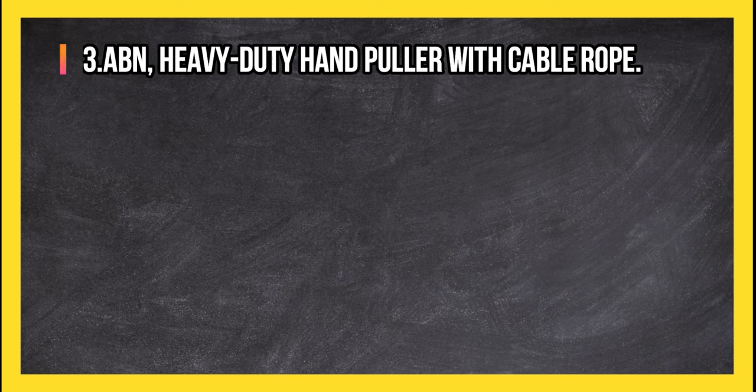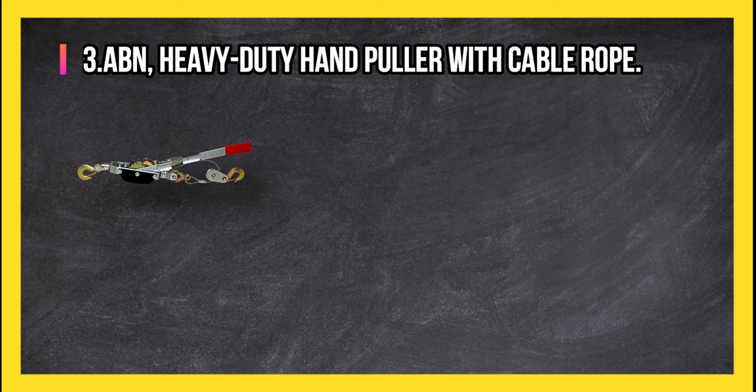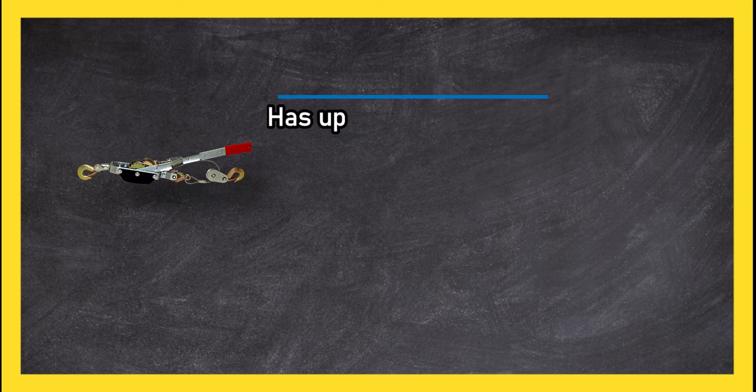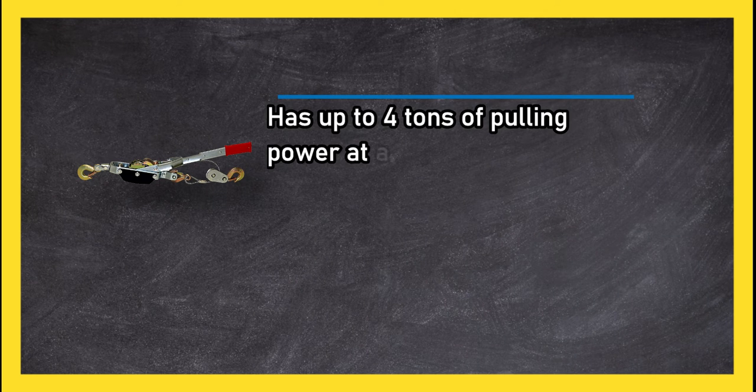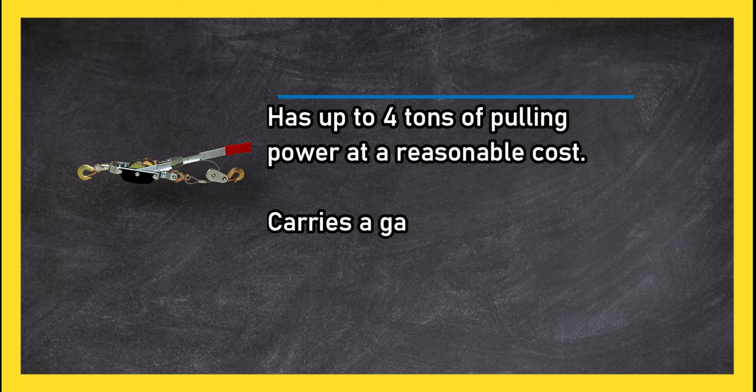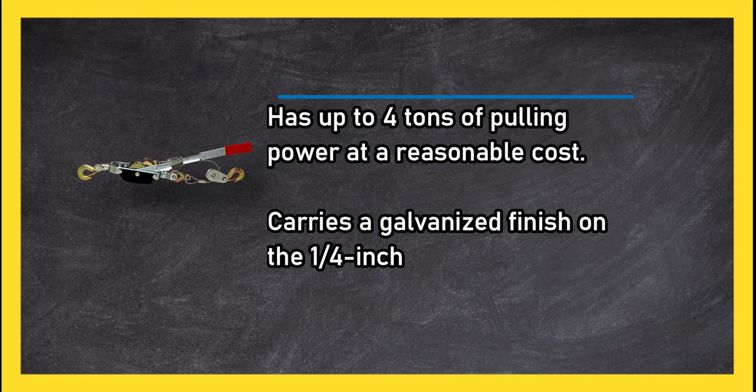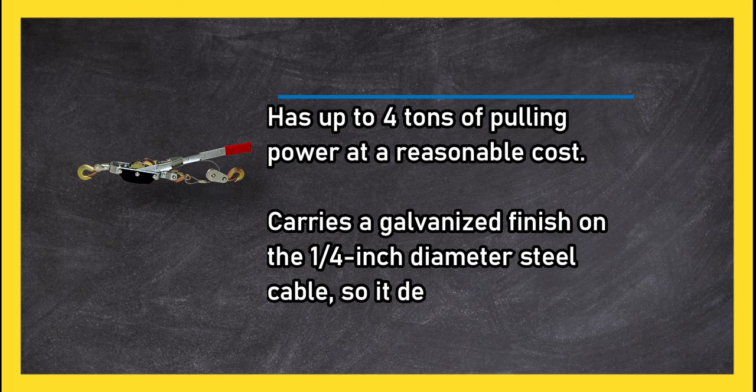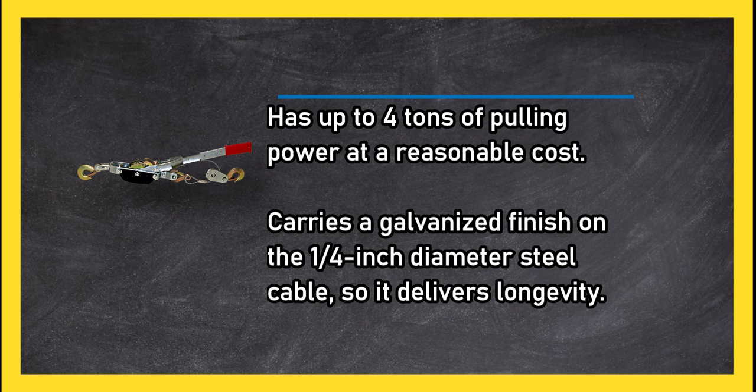At number 3, ABN heavy-duty hand puller with cable rope has up to 4 tons of pulling power at a reasonable cost. Carries a galvanized finish on the 1/4 inch diameter steel cable so it delivers longevity. Uses a long handle with a non-slip grip so you can apply the maximum amount of force.